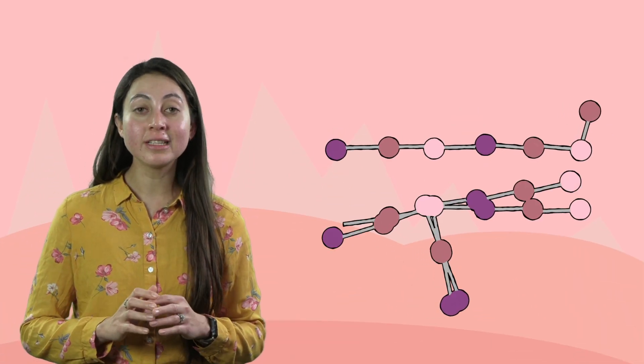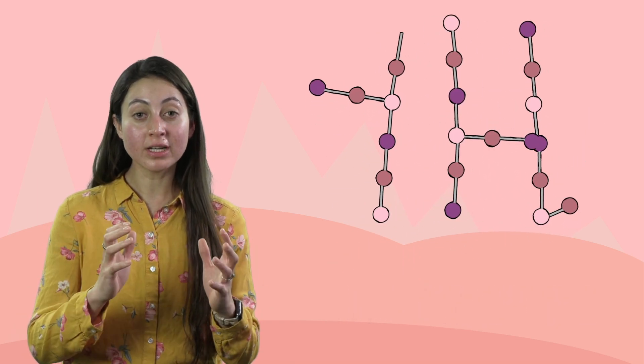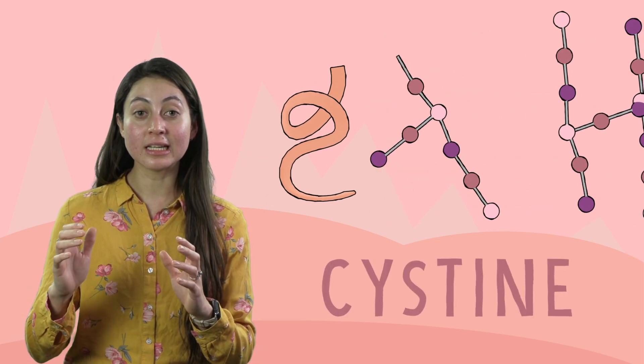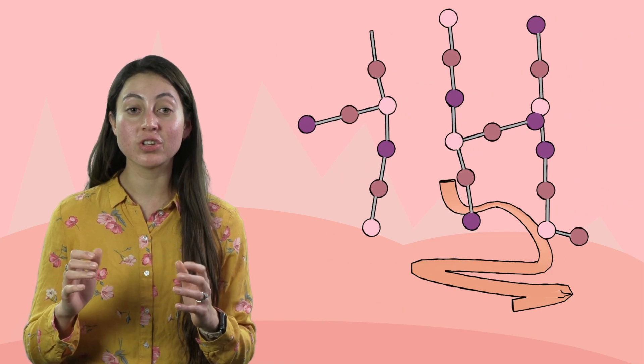We call it the IJN machine. It's made of three proteins working together so that every time they see the amino acid 16, they modify it so that the molecule takes on a more rigid structure.